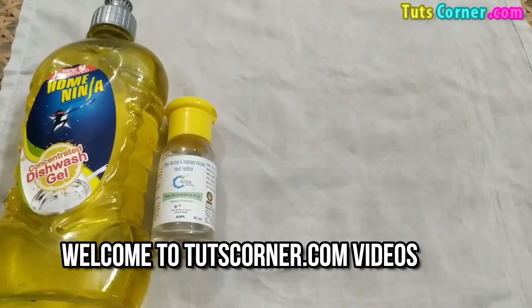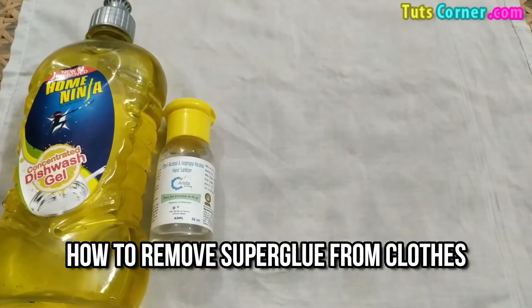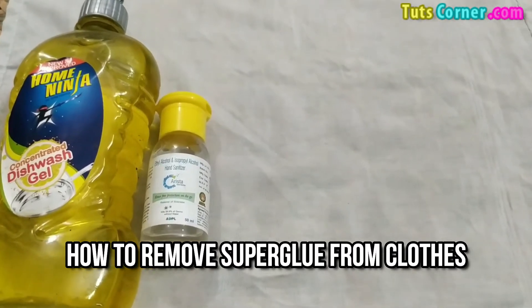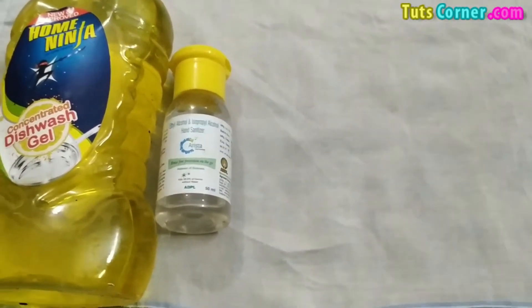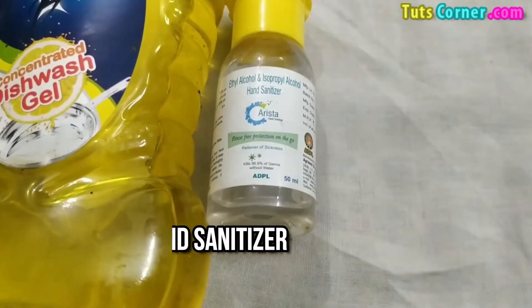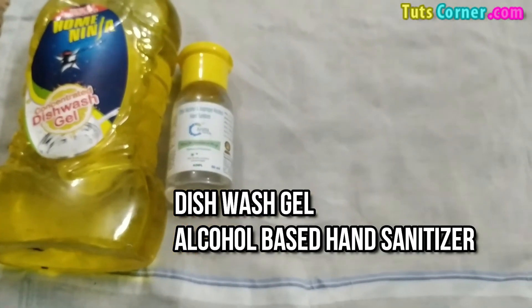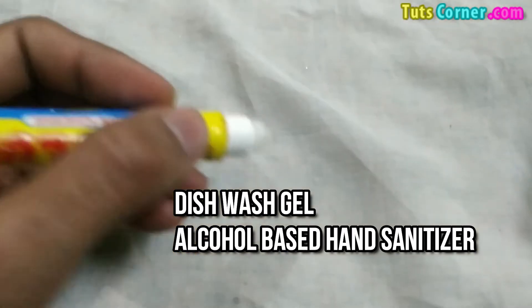Hello friends, welcome to our channel. Today in this video we are going to tell you how you can remove super glue from clothes very easily. For this you need ingredients or things like dishwash gel and alcohol-based hand sanitizer. So let's get started. We are going to show you live proof of how you can remove it.